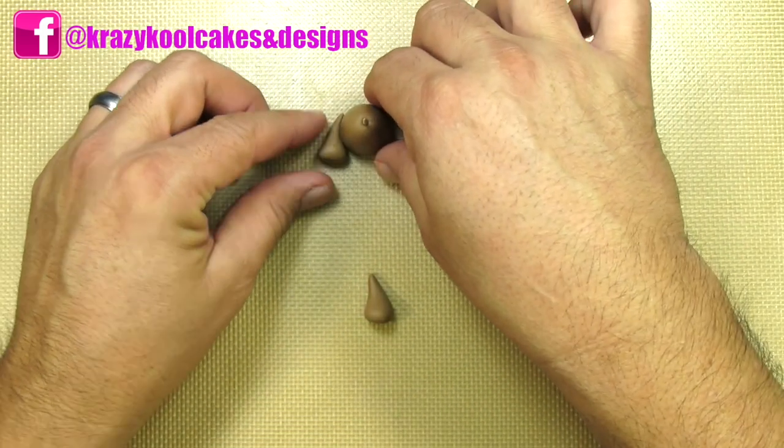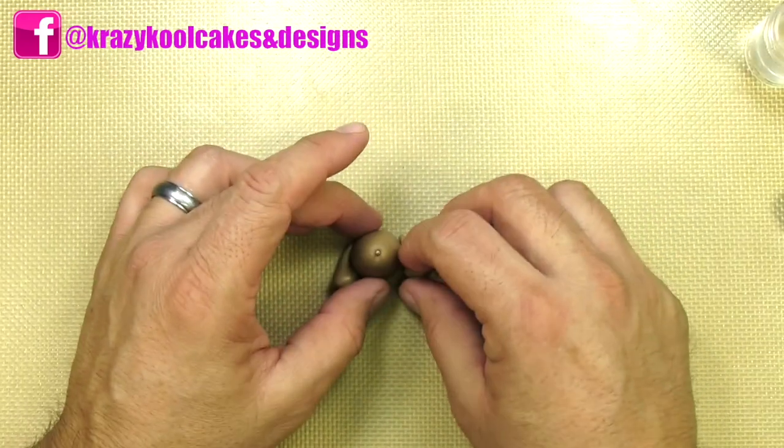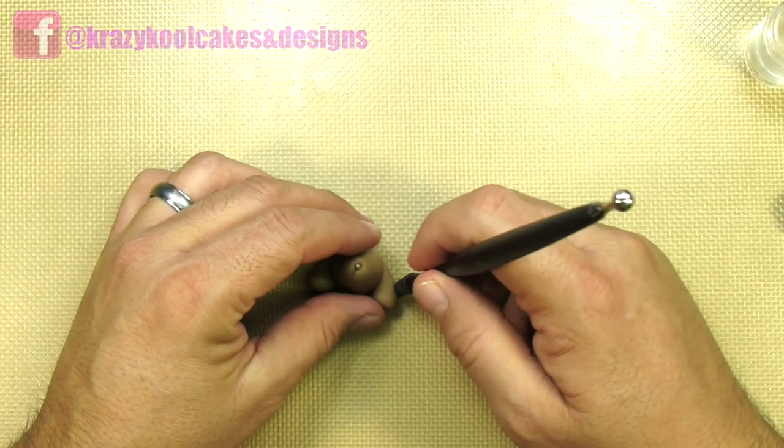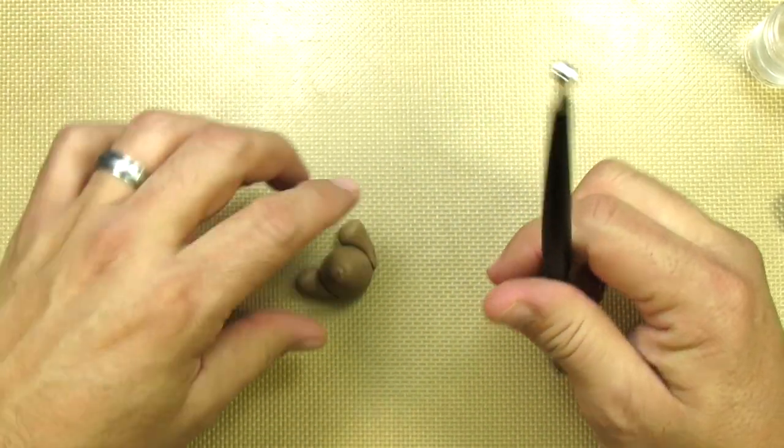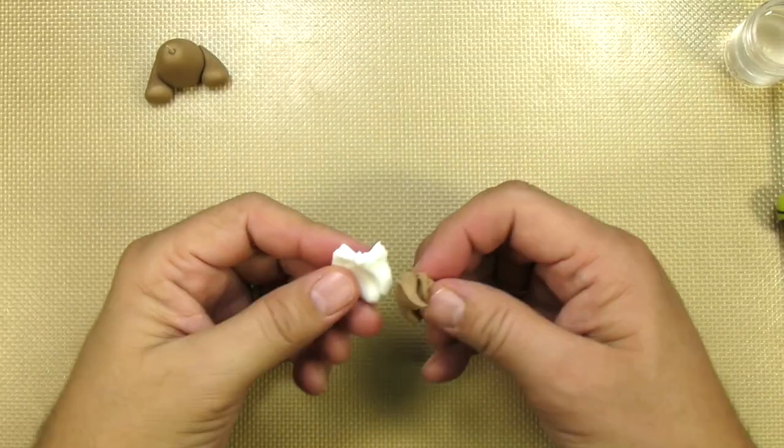I'm using edible glue to stick everything together. Check out our tutorial on how to make it. Once glued, Arnie's using the flat end of our medium-sized ball tool to make sure the legs are totally flush up against the torso. You want to make sure that there's not any big gaps in between the two.